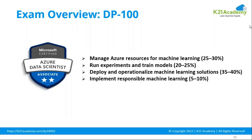For the exam overview: every Microsoft certification has a dedicated exam you must clear to receive the certification. The entire DP-100 exam is divided into four parts. First, Manage Azure Resources for Machine Learning, which constitutes 25 to 30 percent of the exam. Second, Run Experiments and Train Models, which is 20 to 25 percent. Third, Deploy and Operationalize Machine Learning Solutions, which is 35 to 40 percent. And fourth, Implement Responsible Machine Learning, which constitutes around 5 to 10 percent of the exam.